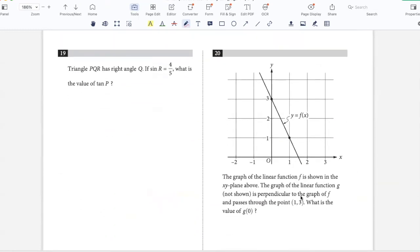Triangle PQR has a right angle Q. Let's say this is PQR, right angle Q. If sine R is 4 by 5, sine R is opposite over hypotenuse, 4 by 5. What is tan P? By Pythagoras theorem, this would be 3 and tan P would be opposite over base, so that would be 3 by 4.